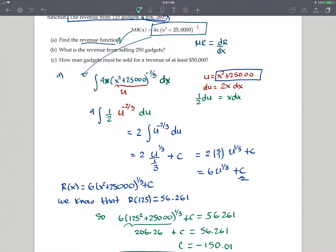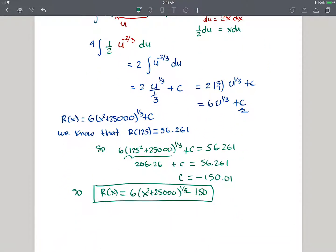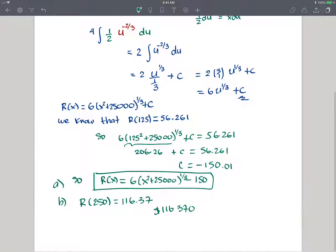Now, what's the revenue from selling 250 gadgets? So it's very simple. Now I just plug in, plug in 250, right? And for part B, you do R when you plug in 250 in here. And I have my calculator. You can do this easily in your calculator. And I have, when you plug in 250, you get 116.37. So, if you write the answer in dollars, this would be $116,370.